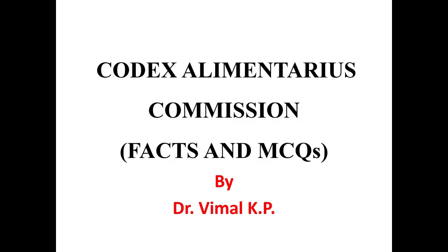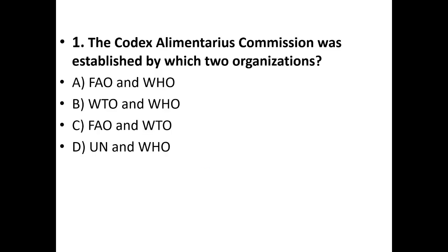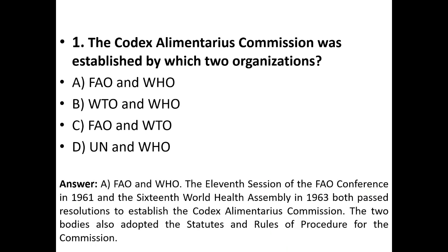Codex Alimentarius Commission: facts and MCQs. First question: The Codex Alimentarius Commission was established by which two organizations? A) FAO and WHO, B) World Trade Organization and World Health Organization, C) Food and Agriculture Organization and World Trade Organization, D) United Nations and World Health Organization. The answer is option A — FAO and WHO. The 11th session of the Food and Agriculture Organization conference in 1961 and the 16th World Health Assembly in 1963 both passed resolutions to establish the Codex Alimentarius Commission. The two bodies also adopted the statutes and rules of procedures for the commission.